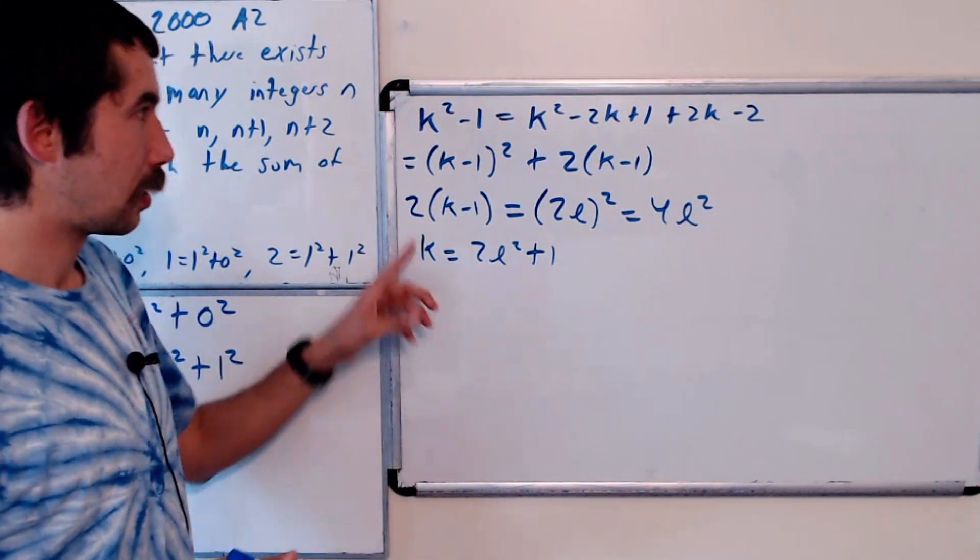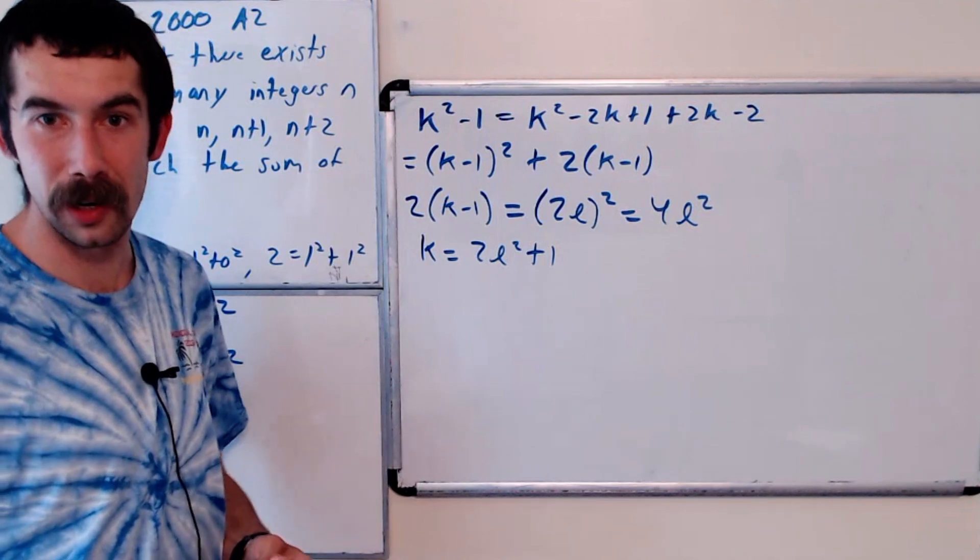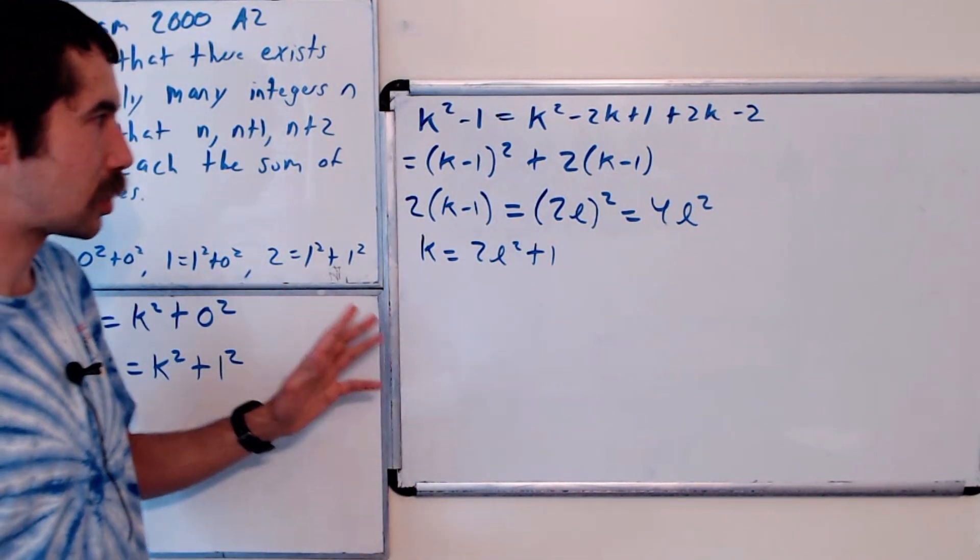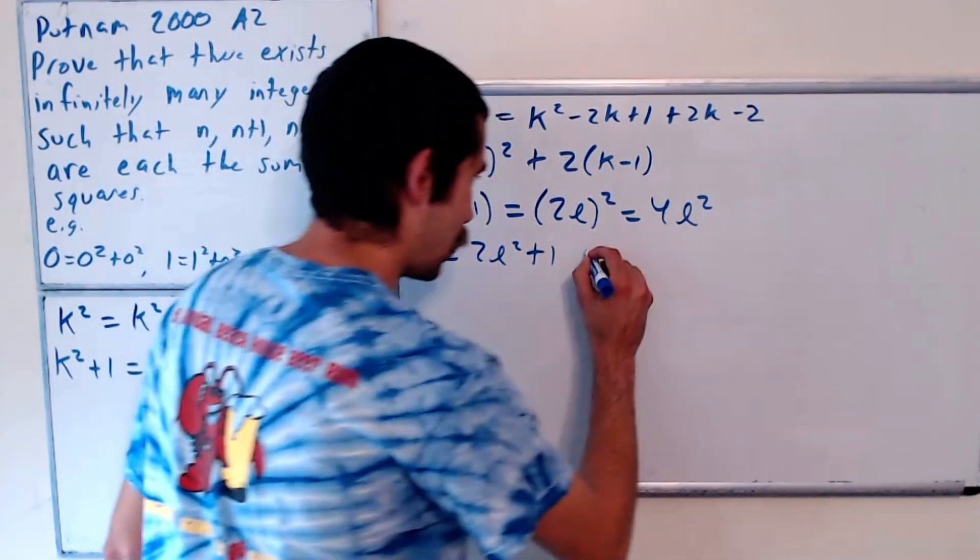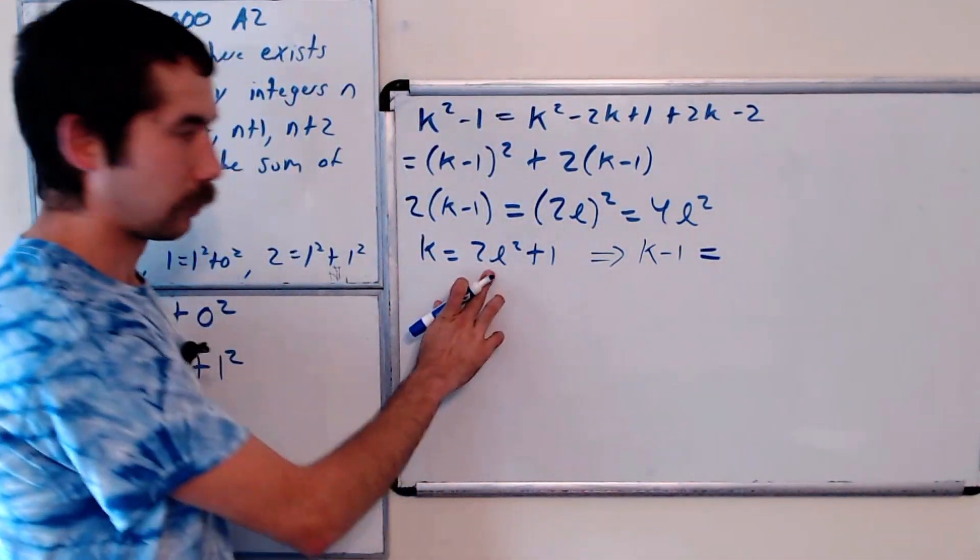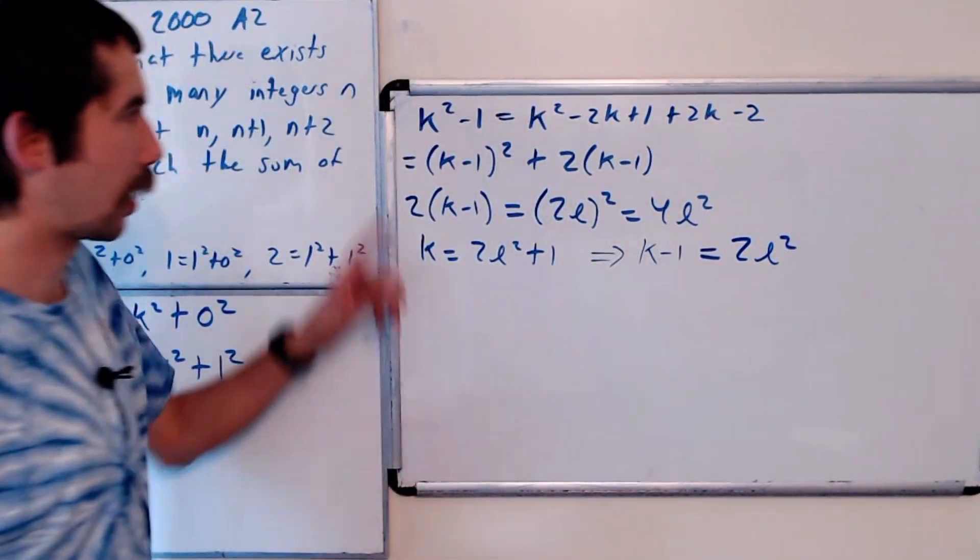I claim that k squared minus 1, k squared, and k squared plus 1 could all be written as the sum of perfect squares. So let's just verify that. And just to make it easier for us, this tells us that k minus 1 is equal to 2l squared.